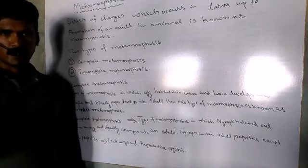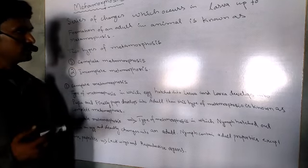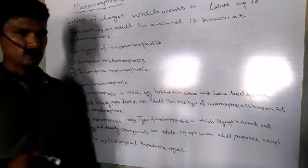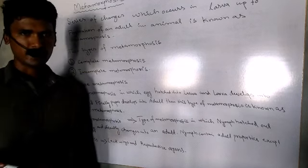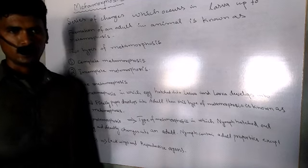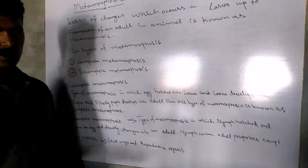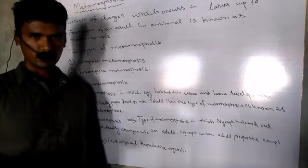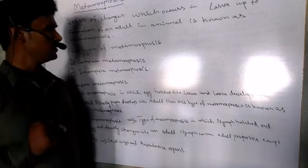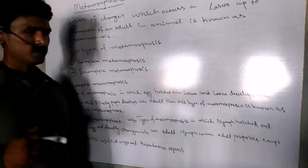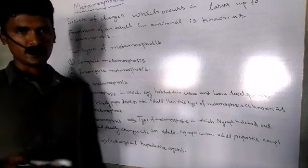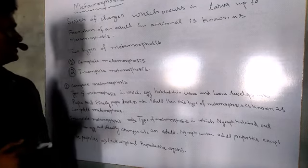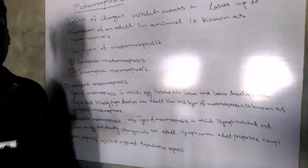There are many characters which are lost or which are unknown during Metamorphosis. Just as in some organisms tail is lost or in some organisms other features which are developed during the Metamorphosis. So Metamorphosis is a series of changes which occurs in larvae up to an adult stage.